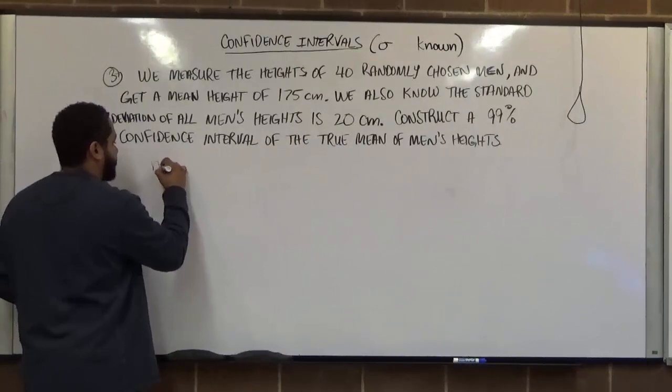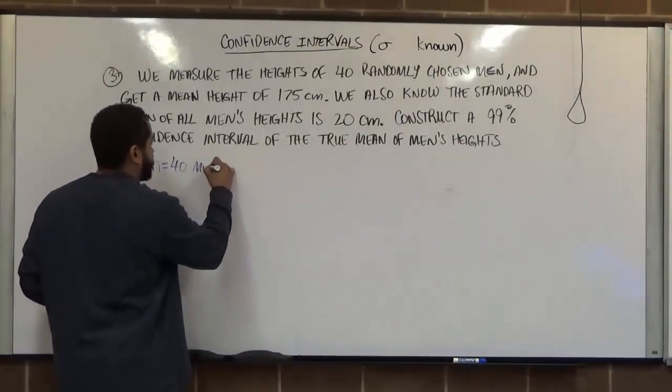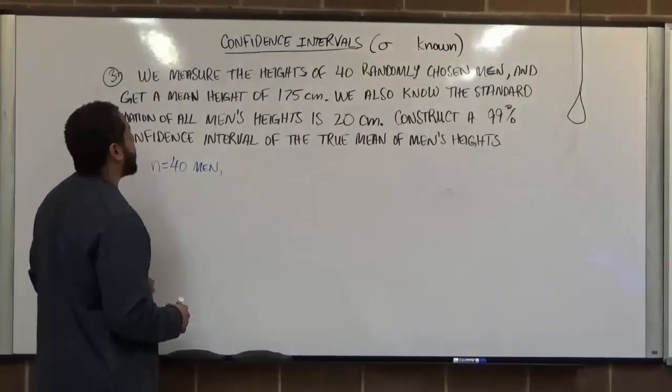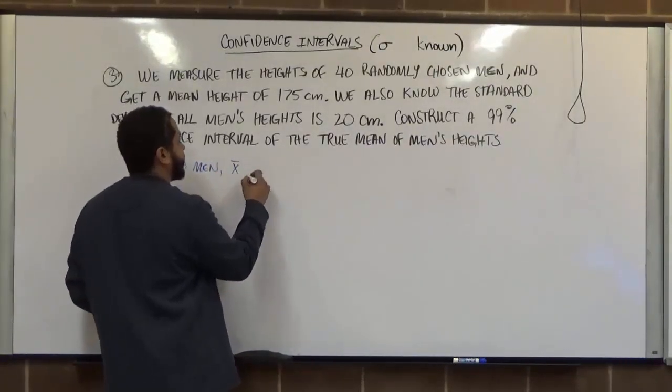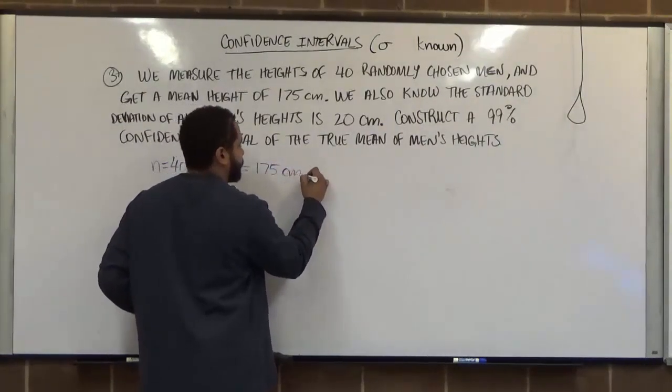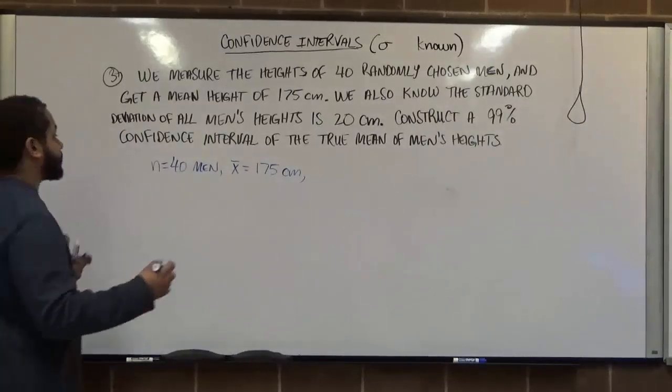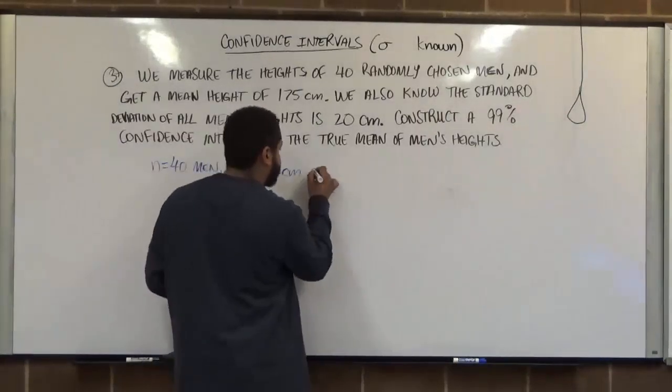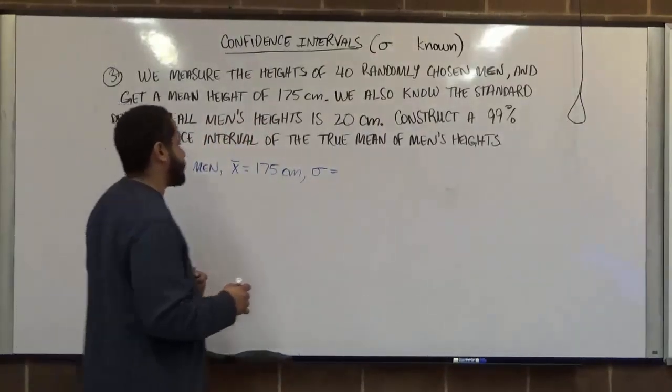So let's make a note of everything we know from what the question has given us. We know that our sample is 40 men. We also know that the average, the best point estimate in this case is x-bar, the sample mean of 175 centimeters for the 40 men that were randomly selected. We also know the standard deviation of all men's heights to be 20 centimeters.